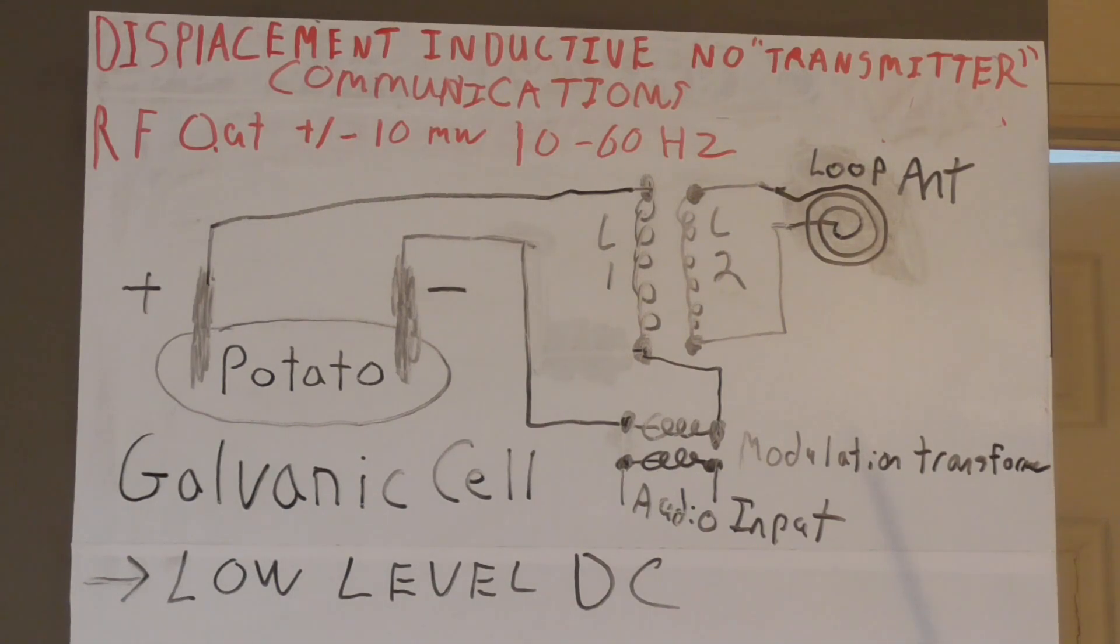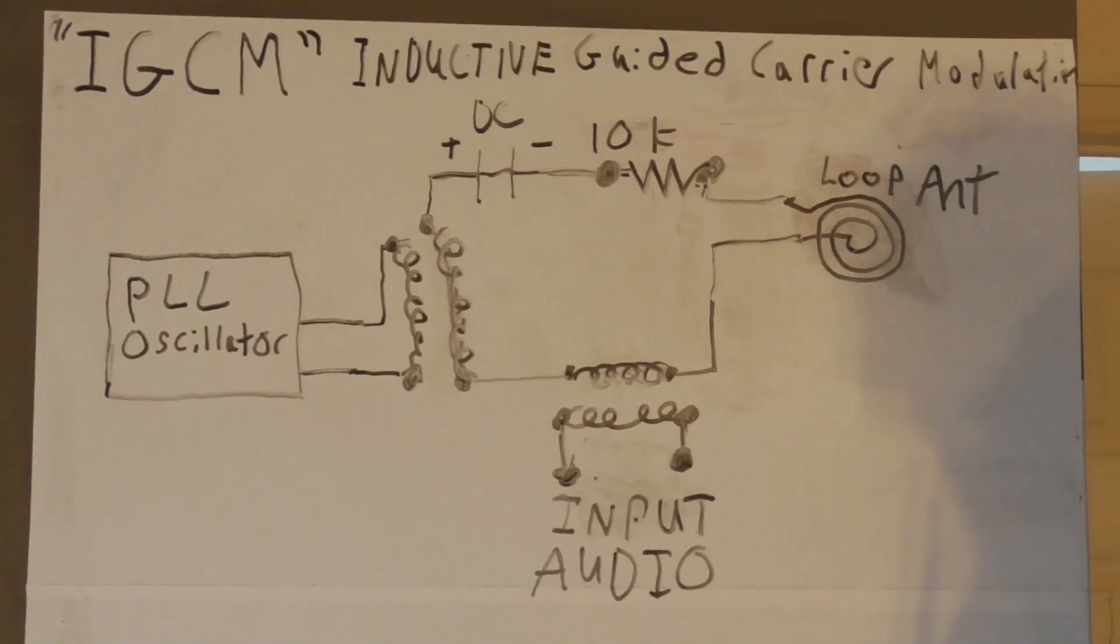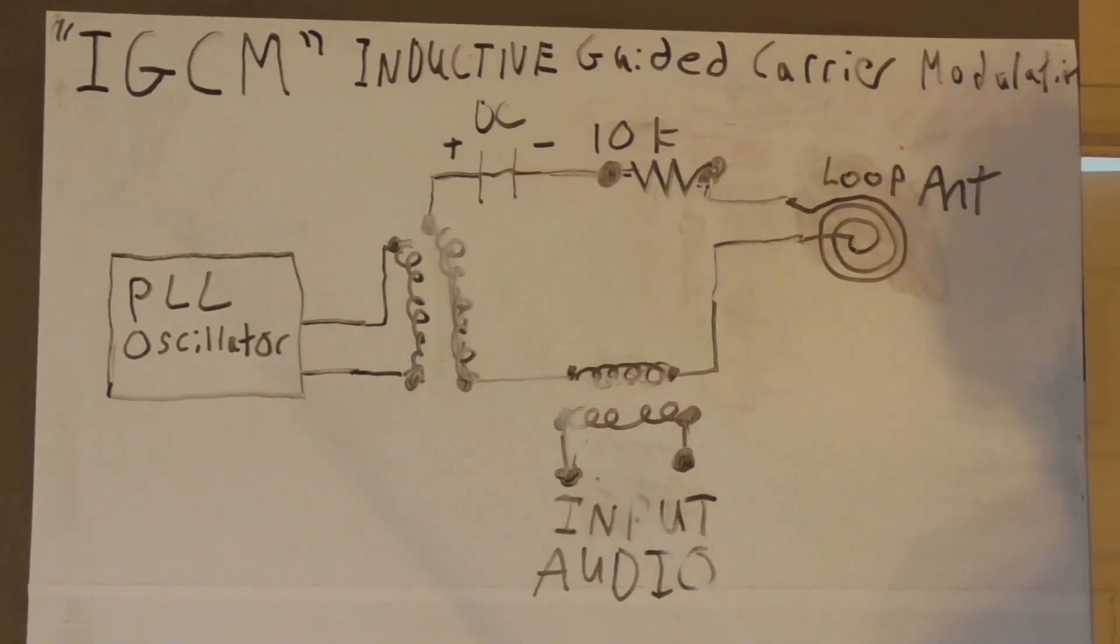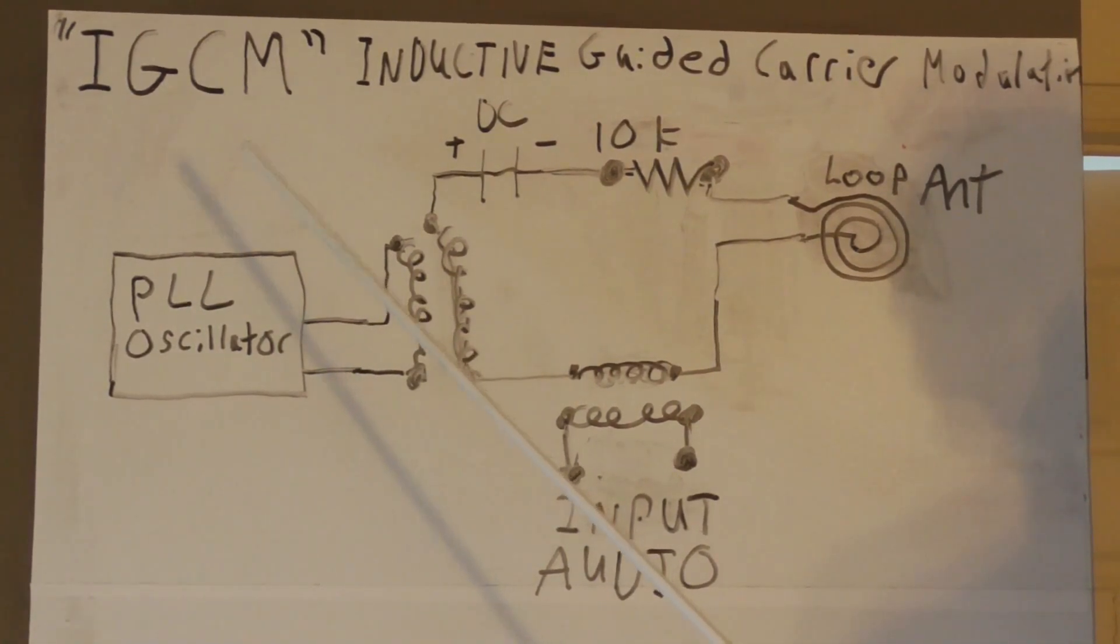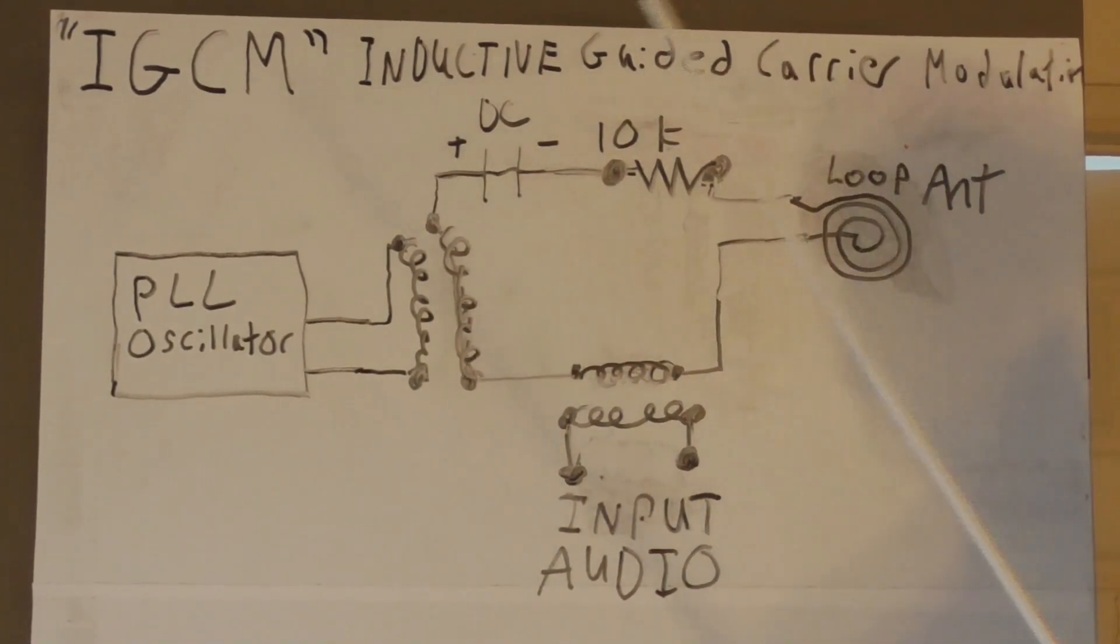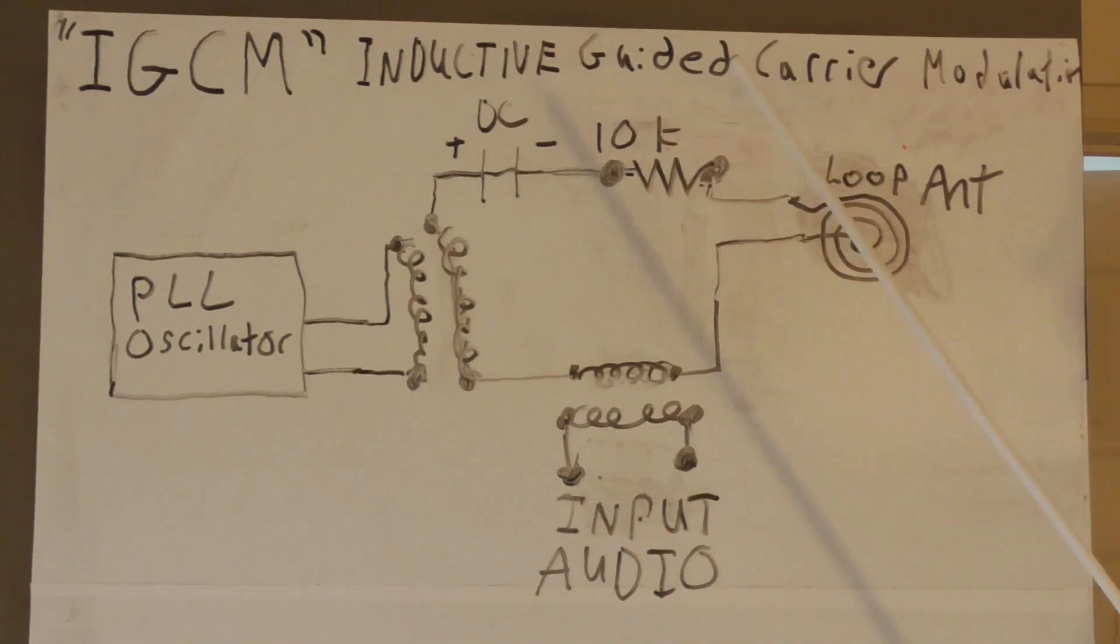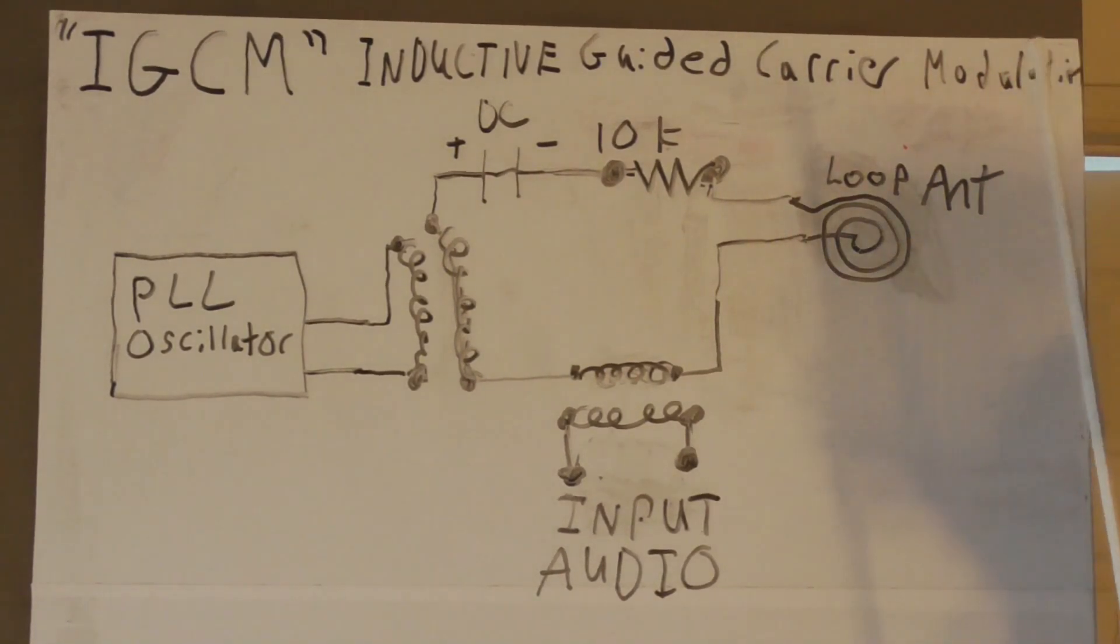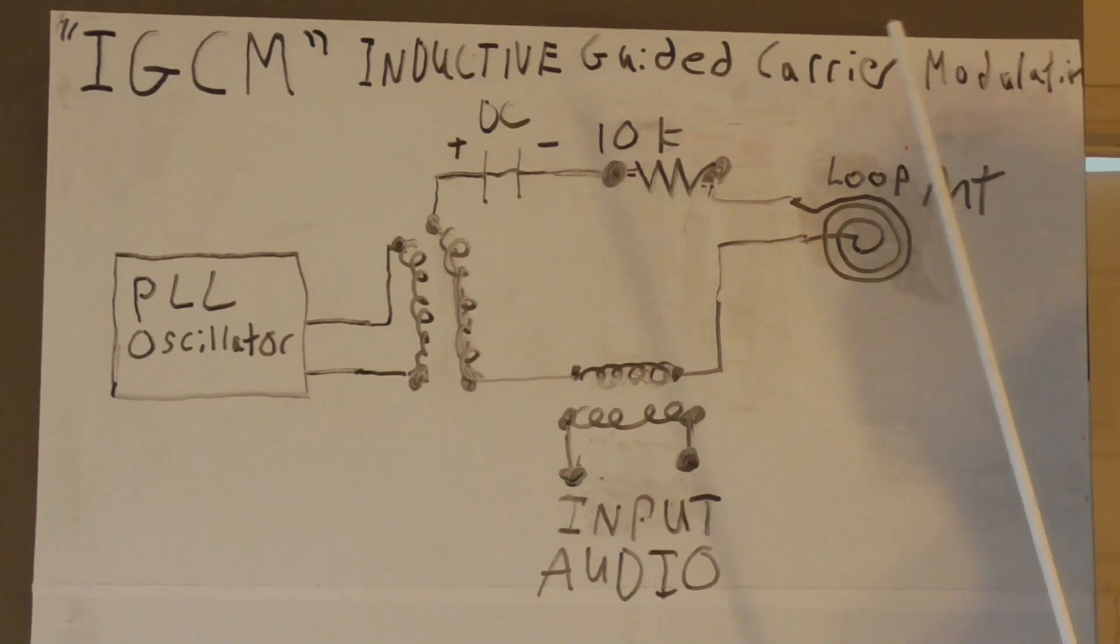Next I'm going to take another step and show you how this could be fine-tuned and used today for practical radio applications. This is a term I came up with because I couldn't find anything relevant. This is another mode of operation I call IGCM, which stands for Inductive Guided Carrier Modulation. Let me explain this mode. If we want to take the previous concept but make it more practical for an actual communication system that we could use today and incorporate it with the radio technology we have, here's a basic schematic of how that would work.